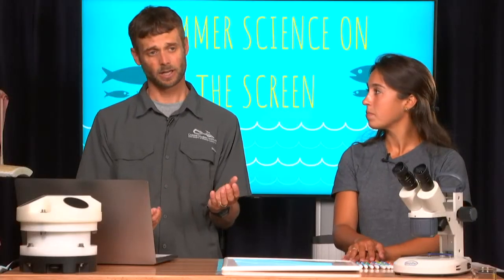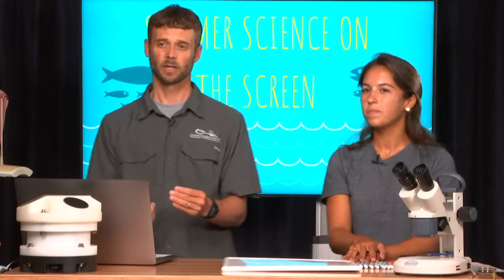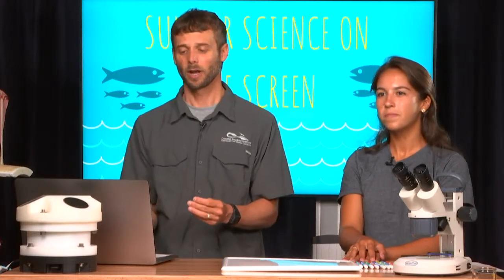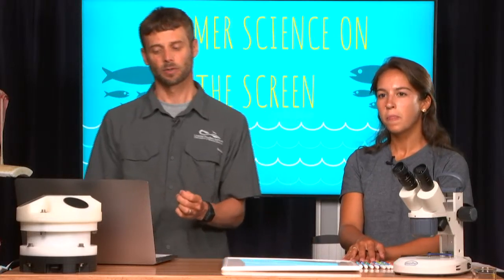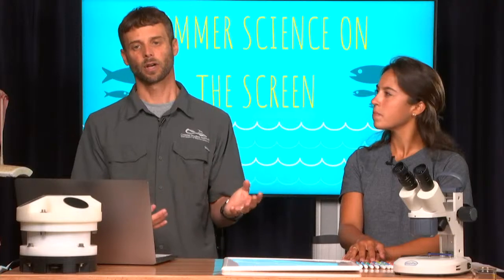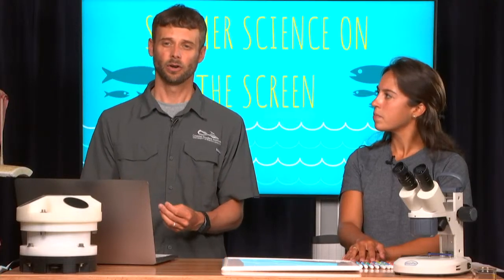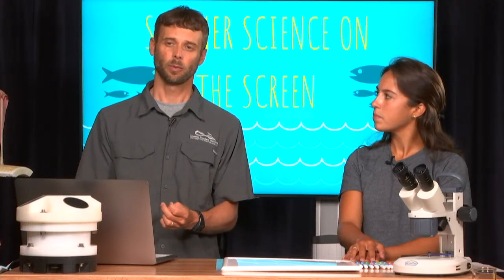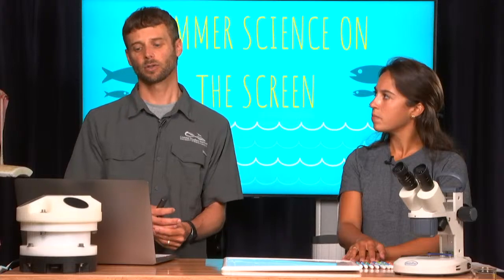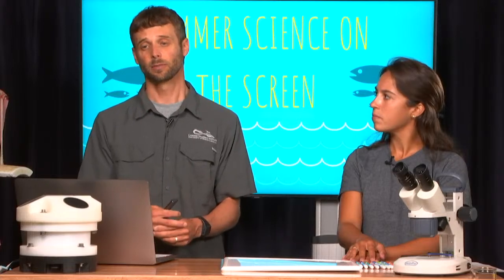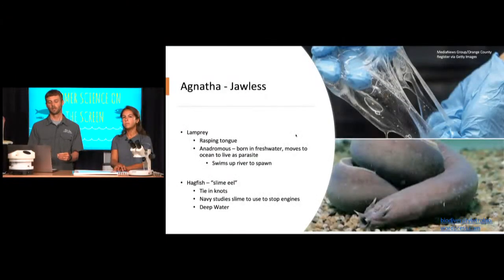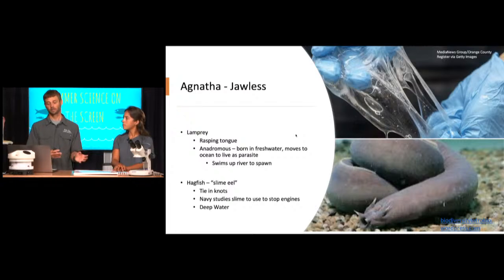The lamprey is interesting because it's anadromous — born in freshwater, then moving into the ocean for part of its life, and then coming back into freshwater when it spawns. During its time in the ocean, the lamprey is a parasite. But when it's in freshwater, it lives a different life and eats different prey.